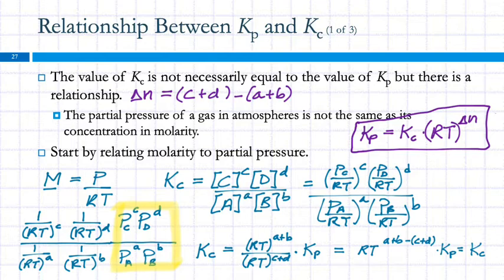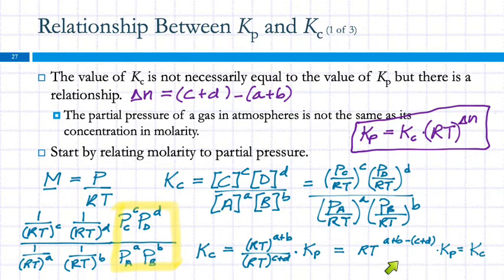If C plus D minus A plus B equals zero, then this RT term goes away, and Kp equals Kc. The reason the exponent appears flipped in the two forms of the equation is that one expresses Kc in terms of Kp and the other expresses Kp in terms of Kc — dividing flips the sign on the exponent.